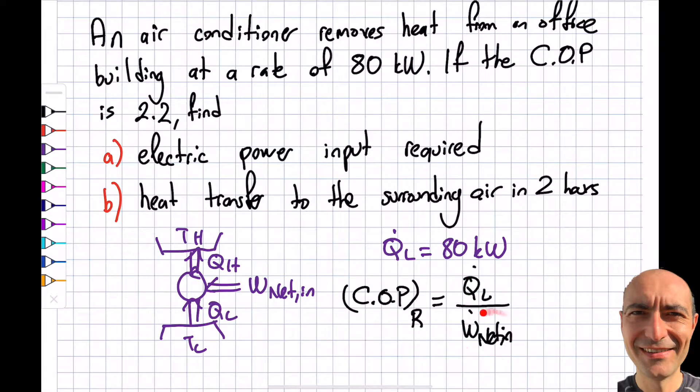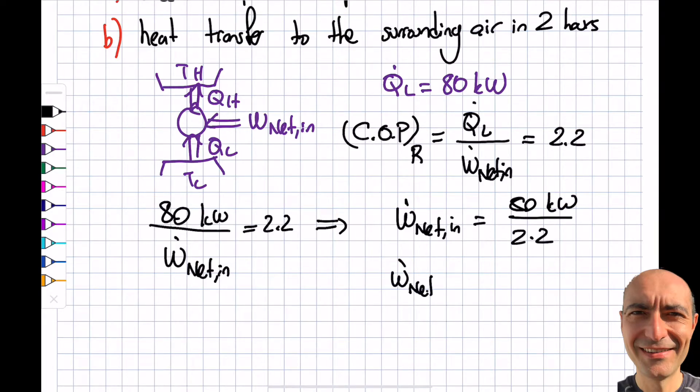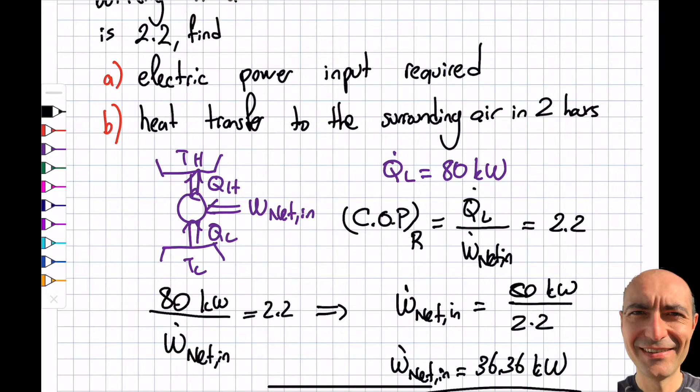This is giving us 2.2, which is given in the question. So I have 80 kilowatts divided by W_dot_net_in equals 2.2. From here, W_dot_net_in is 80 kilowatts divided by 2.2, which gives 36.36 kilowatts. That's the answer to part (a). I have to consume 36.36 kilowatts to make this happen.